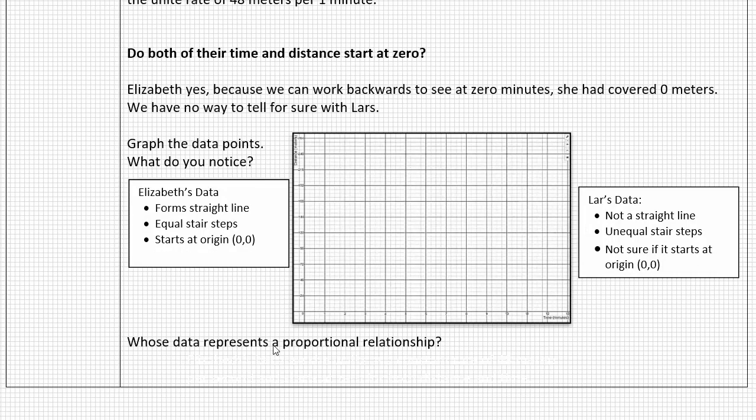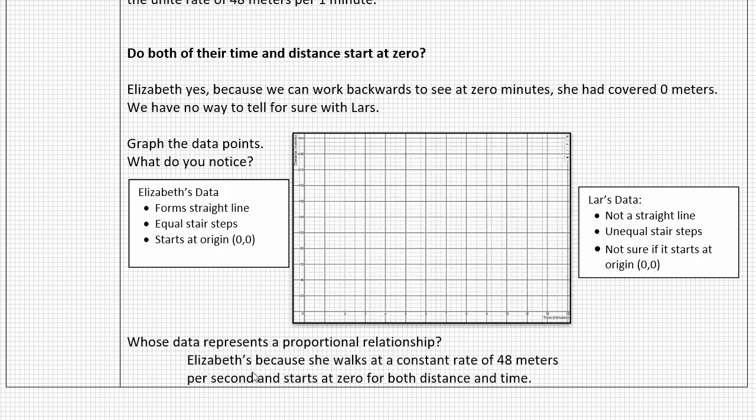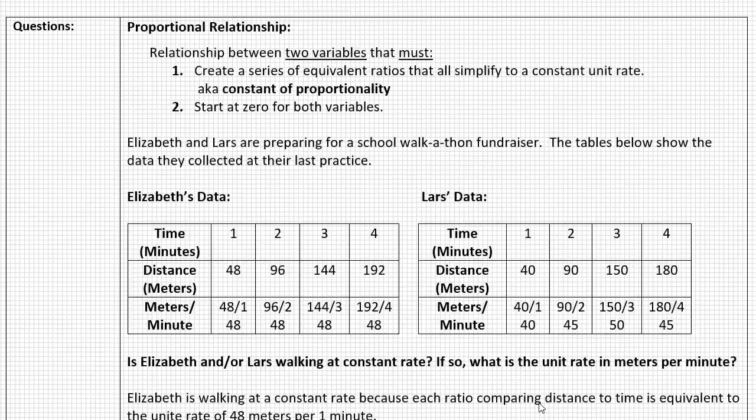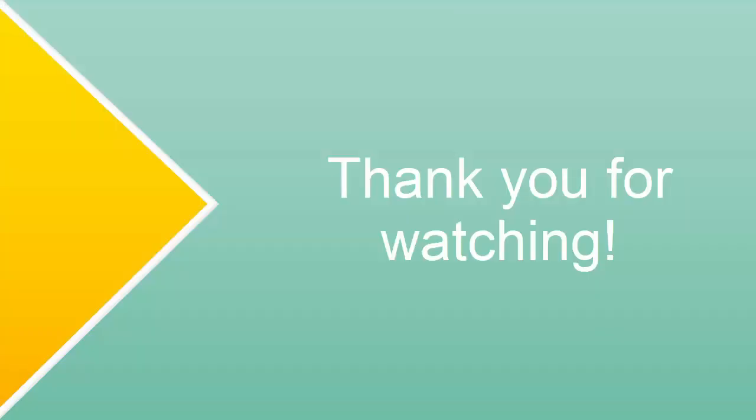So with all of that, if we're asking whose data represents a proportional relationship, what's the correct answer? You said Elizabeth's because she walks at a constant rate of 48 meters per minute, which is her unit rate, and starts at zero for both distance and time. I'd agree with you. And that concludes our video on proportional relationships for today.